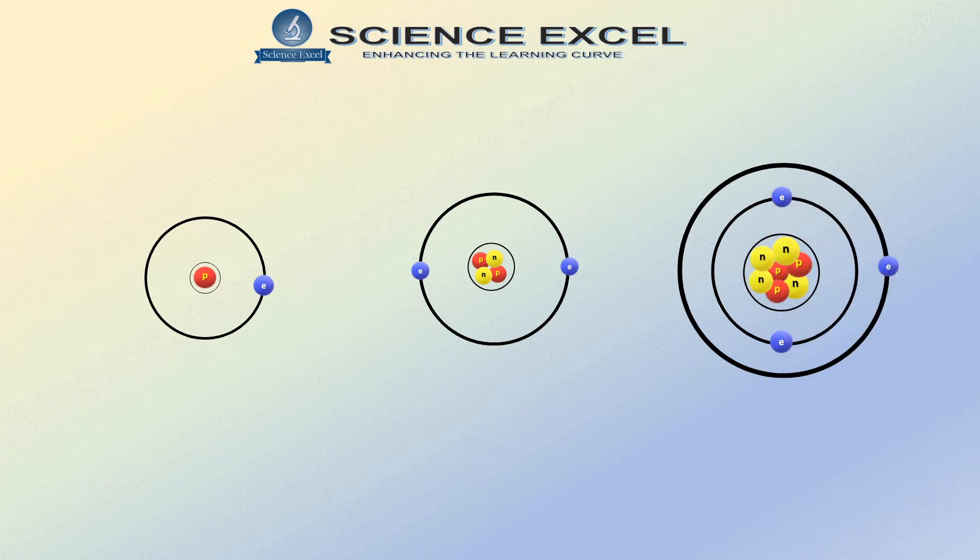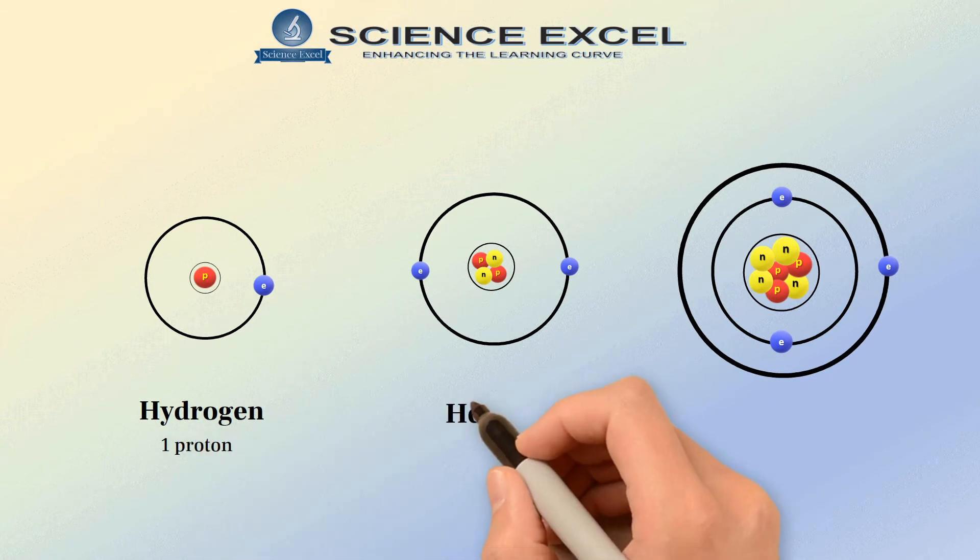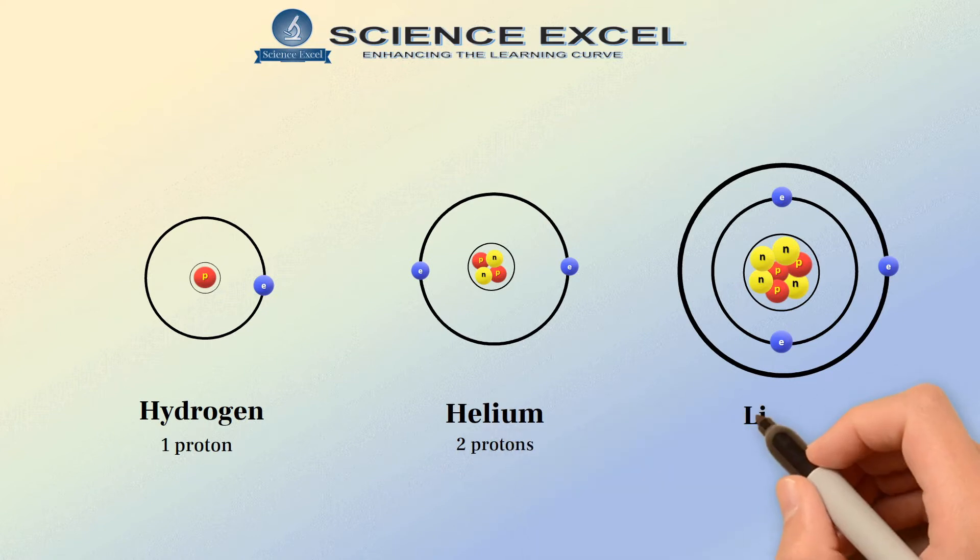What do you mean by this? For example, if we look at the element hydrogen, it has one proton. The element helium has two protons and the element lithium shows three protons.